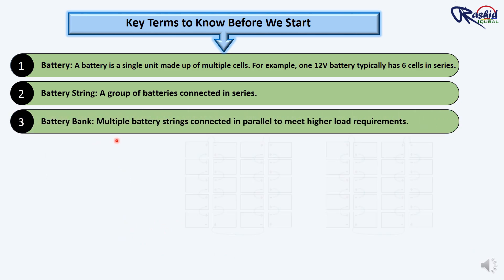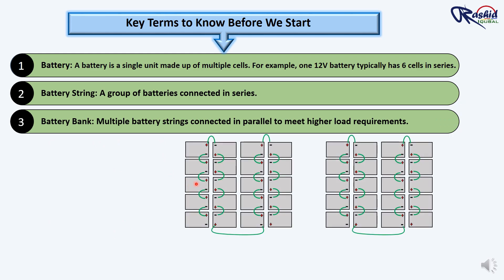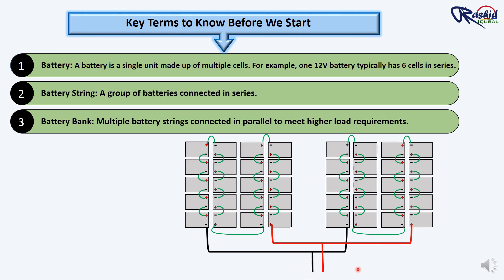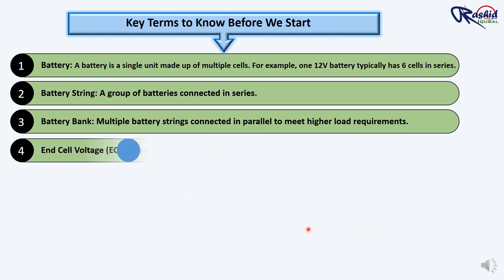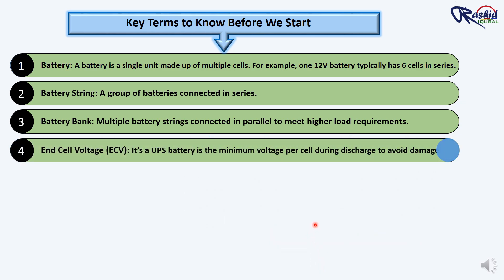Third: Battery bank. A battery bank is created by connecting multiple battery strings in parallel. This increases the overall capacity of the system while maintaining the same voltage. If you need to power a larger UPS or load, you can connect several battery strings in parallel, which allows for more energy storage to meet the demand.